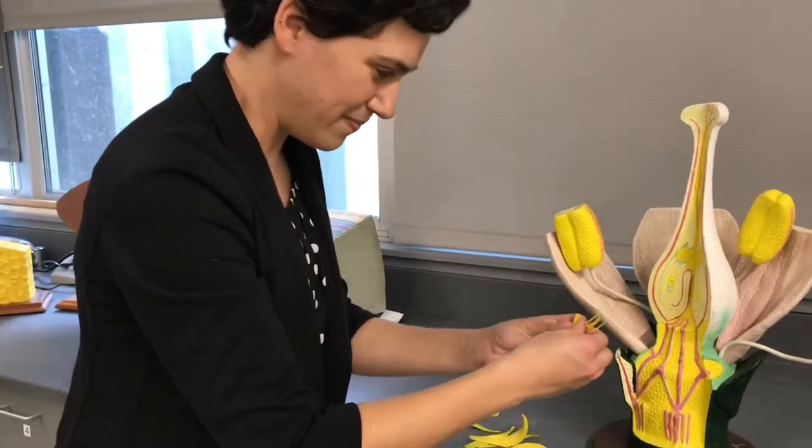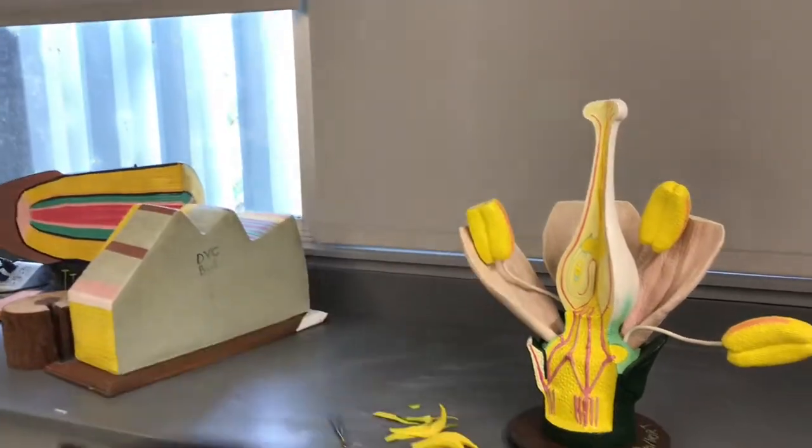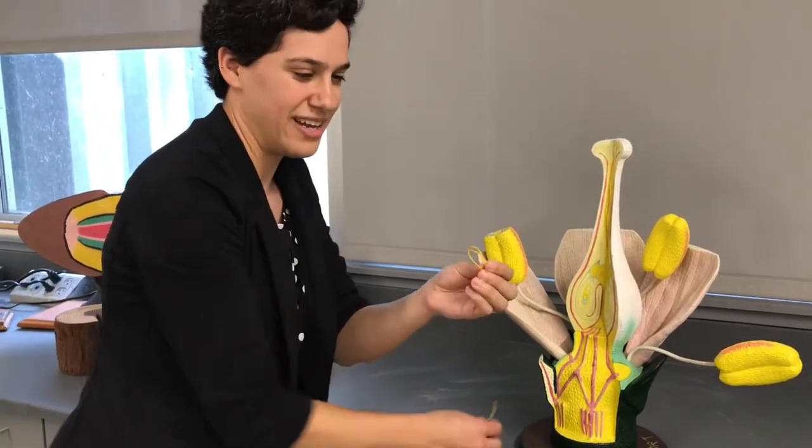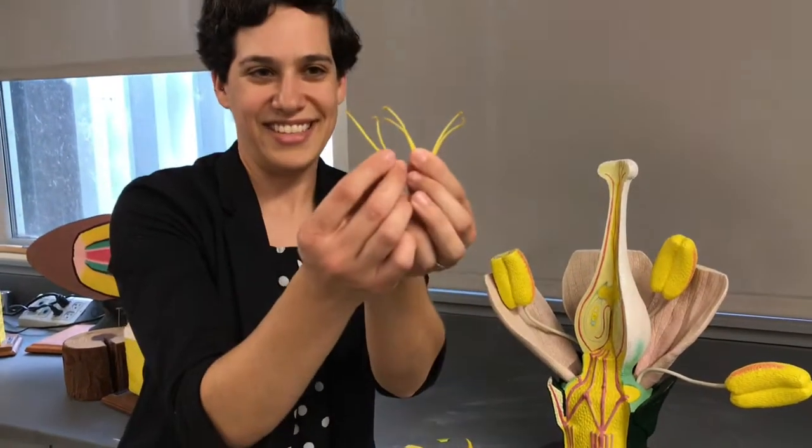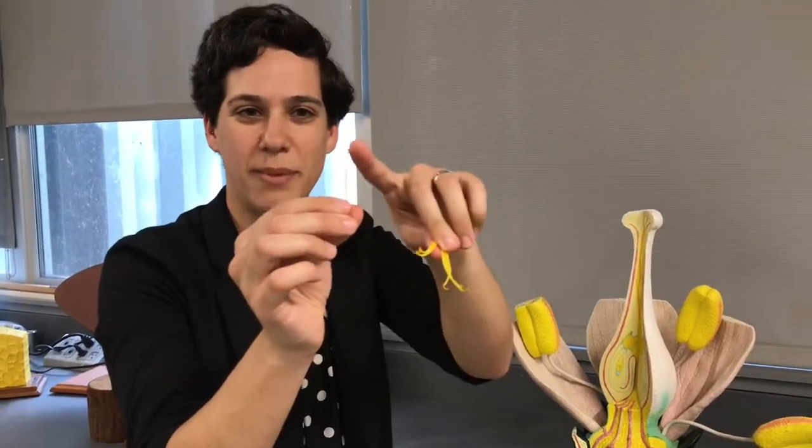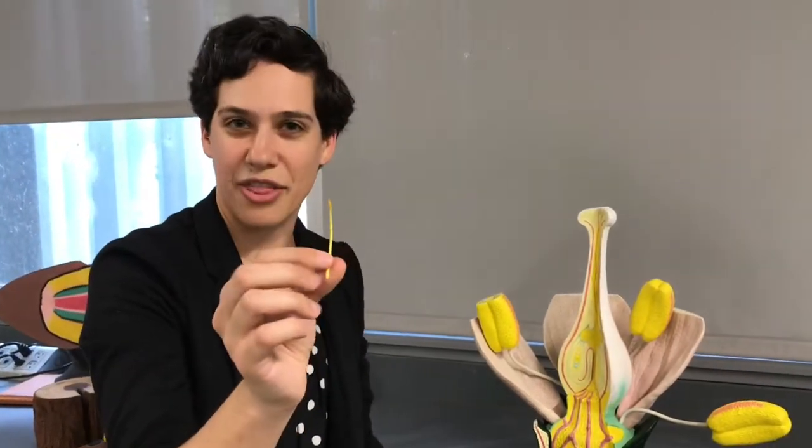Here are the stamens of this lily. I dropped one, but we've got many of them. So here we've got six stamens in this lily plant. And you can see there's a part up top that looks a little bit fuzzy. That's the anther.